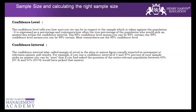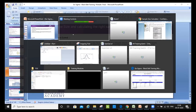Confidence level basically talks about how confident and how accurate I am towards the data taken from the sample. For example, if my population mean of cycle time is 300 minutes and I can only do sampling, I want my sample mean to be very close to 300. I'll use Excel to make it clearer.